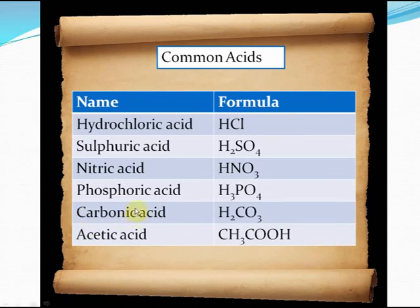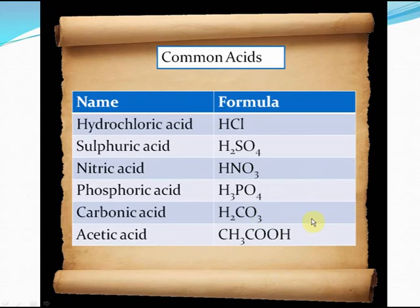One interesting fact is that acetic acid is basically vinegar — the vinegar we use in decorating food substances. That is acetic acid, CH3CO3. Carbonic acid is the acid found in Pepsi, Coke, and all these carbonated drinks. So some acids are not that corrosive; they are actually weak acids and you can even consume them. Hydrochloric acid, sulfuric acid, and nitric acid however are very very corrosive — you have to stay away from them.